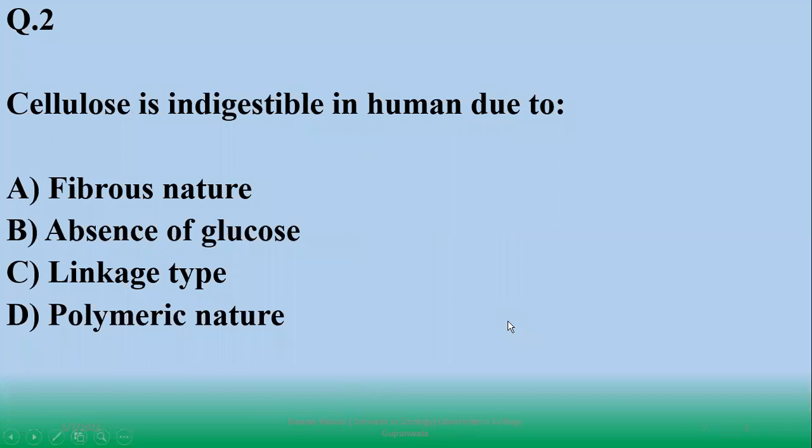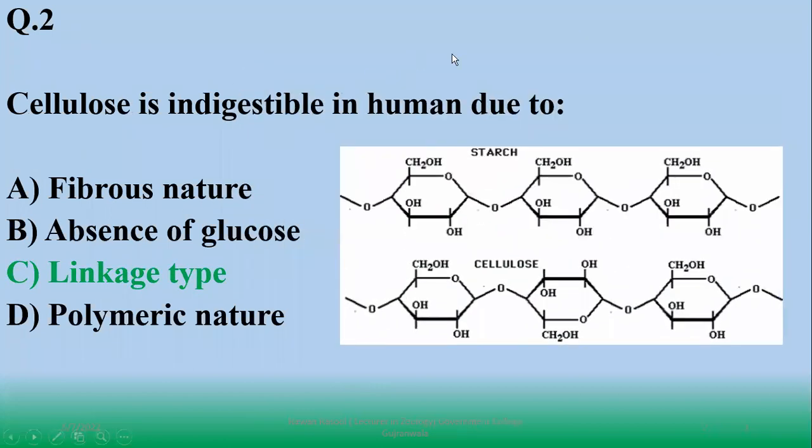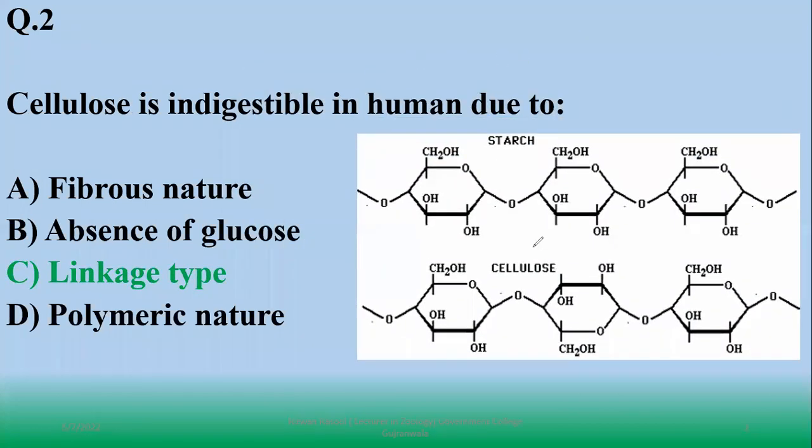Question number two: cellulose is indigestible in humans due to - cellulose digest na hone ki wajah hai ki isko digest karne ke liye jo enzymes required hain, hamare paas maujood nahi hai. So that's why the answer is C.